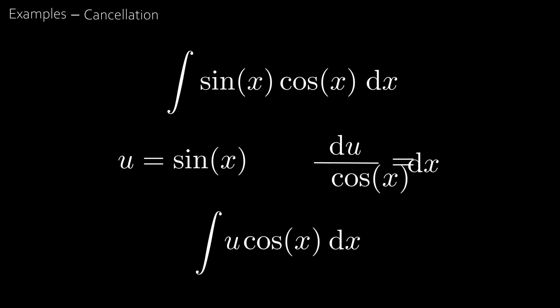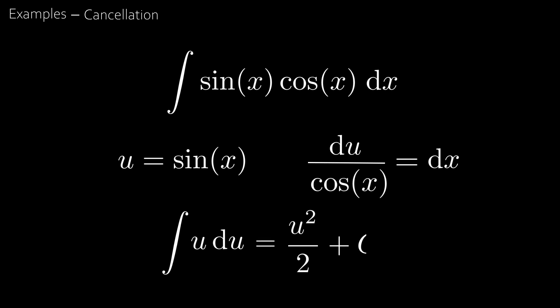So we can just substitute in for dx. Now we see that cosine x cancels out, leaving us with the integral of u du, which is just u squared over 2 plus c. Since u equals sine x, we get sine squared x over 2 plus c, which is the answer to the integral.